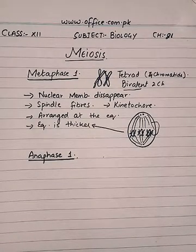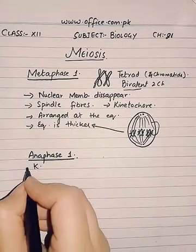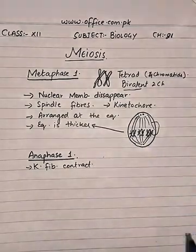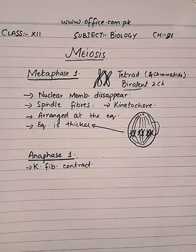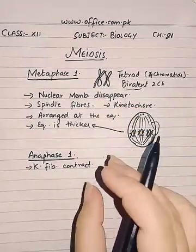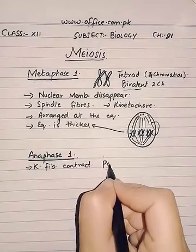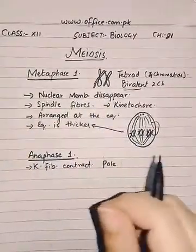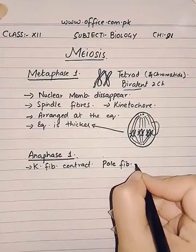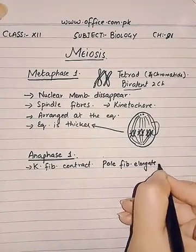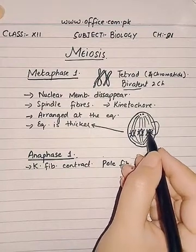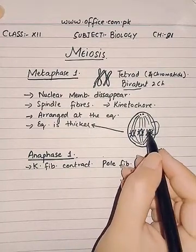Now let us discuss anaphase one. In anaphase one, the kinetochore fibers will contract — just as in mitosis, they will stretch and pull the chromosomes towards like poles of the cell. The pole fibers will elongate and the kinetochore fibers will contract. Pole fibers elongate to make the cell long enough so it is stretched enough to separate the chromosomes.